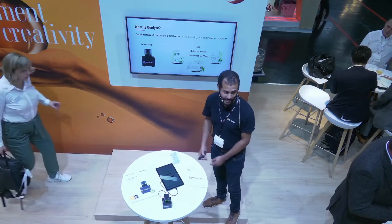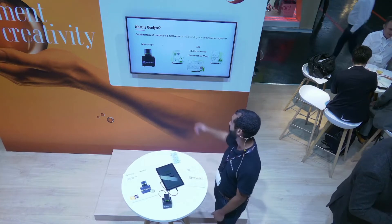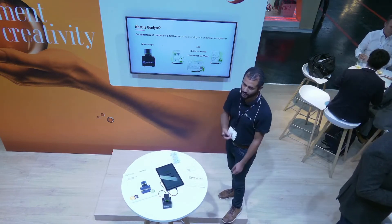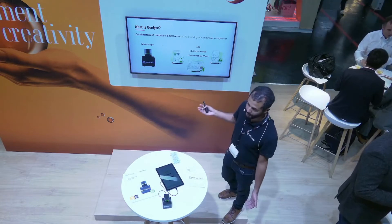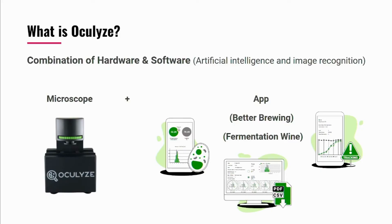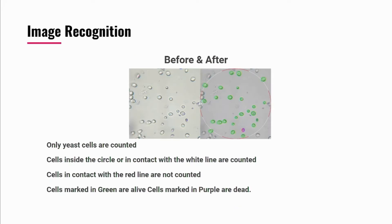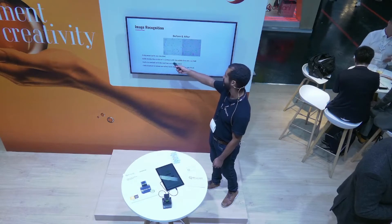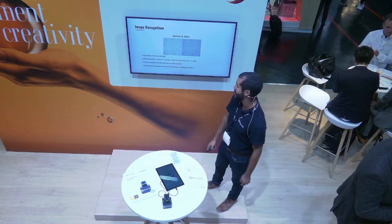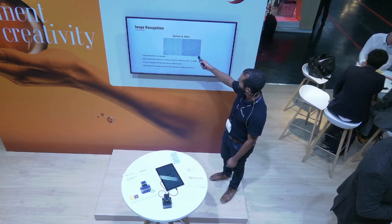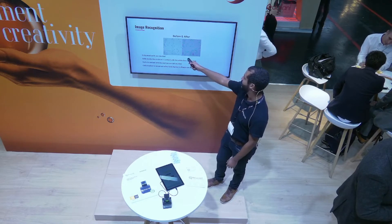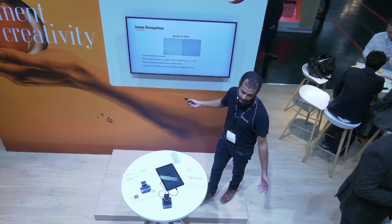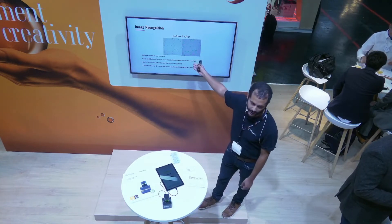What is Alcoholize? It's the combination of hardware and software — here's the microscope and here is the app. We have two apps: one for beer brewers and one for winemakers. Our technology is based on image recognition. Yeast cells are analyzed before and after. Only yeast cells inside the circle or in contact with the white line are counted; cells in contact with the red line won't be counted. Cells marked in green are live and purple ones are dead. It's basically the digital application of the Thomas Chamber method.